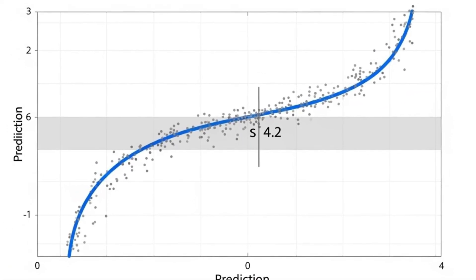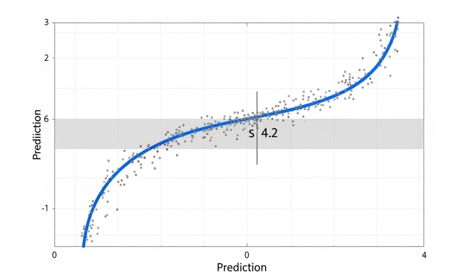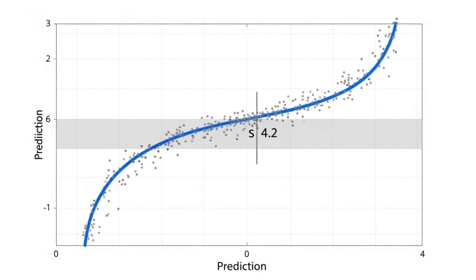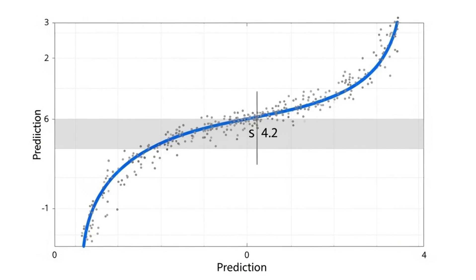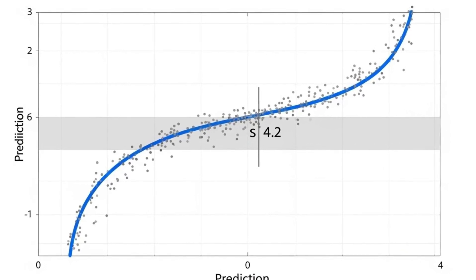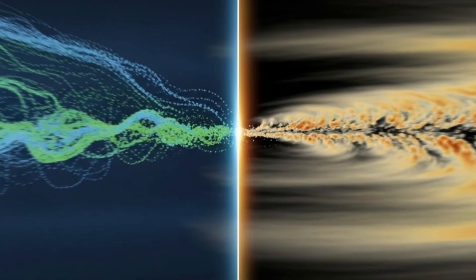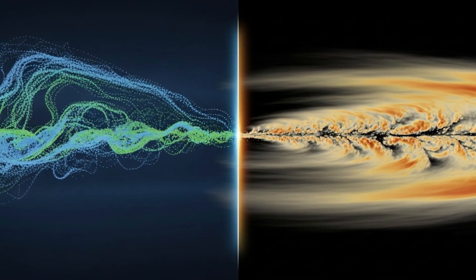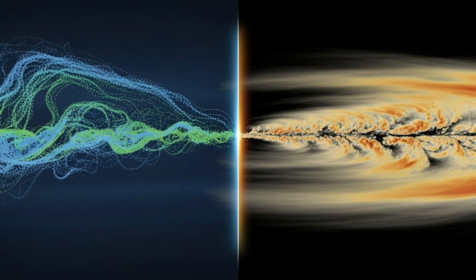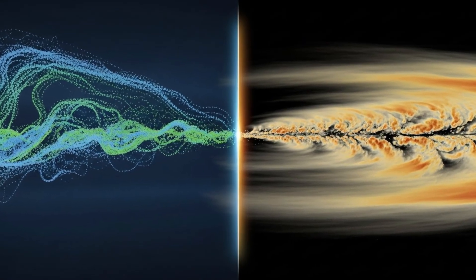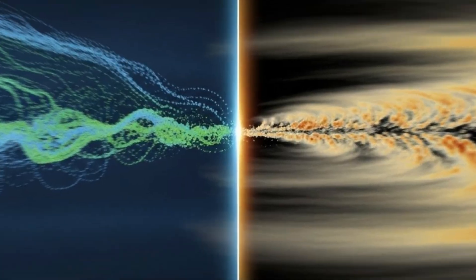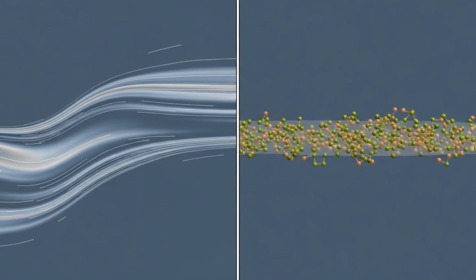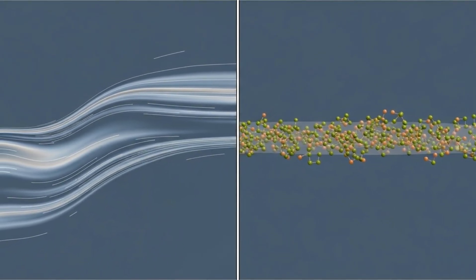Either way, we win. Either we discover something new and expand the boundaries of knowledge, or we confirm what we already know with even greater confidence. Either way, we learn. And that's the gift of anomalies like this one. They remind us that the universe is not obligated to make sense to us. It doesn't owe us clarity, it just is. And we, curious, stubborn, imperfect, are trying to understand it anyway.